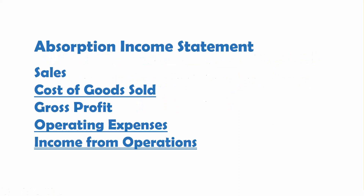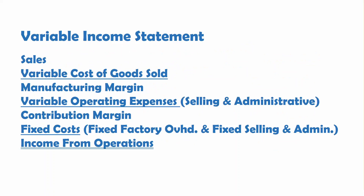The variable income statement looks a little bit different. It starts with sales, but instead of cost of goods sold, it has variable cost of goods sold, which means it would not include your fixed factory overhead. Sales minus the variable cost of goods sold gives you manufacturing margin. Then you subtract out your other variable costs — your variable operating expenses — to get contribution margin, because sales minus variable cost is contribution margin. You subtract out your fixed costs and you get your income from operations.